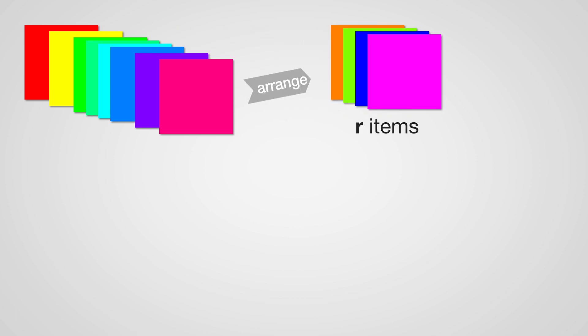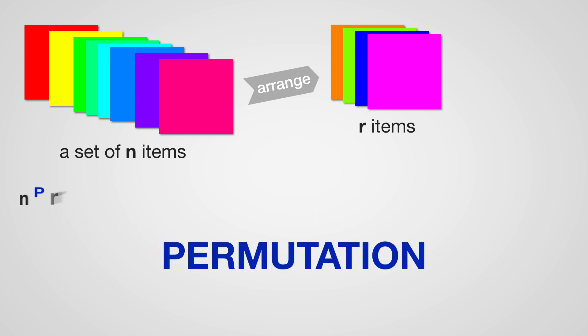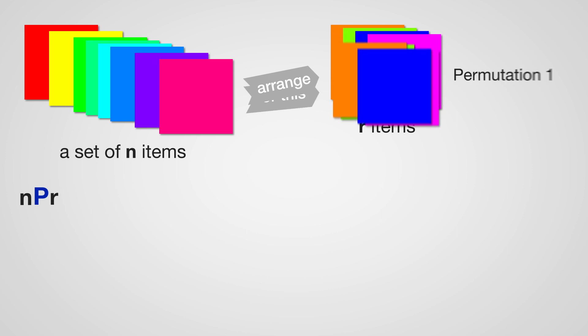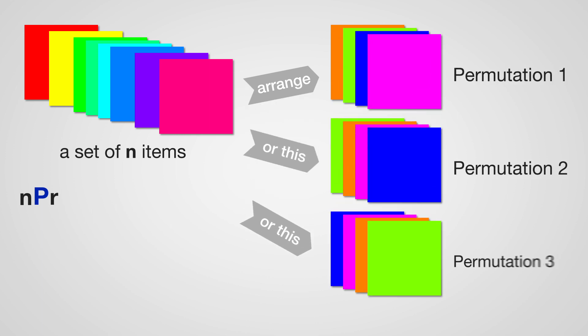When you arrange r things from a set of n, that's a permutation. It's when the order of things matters.